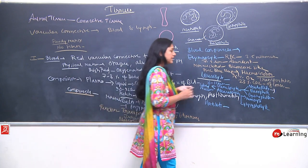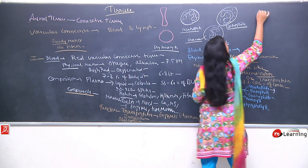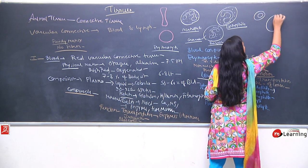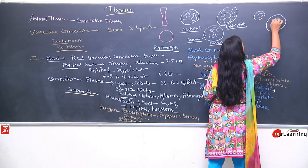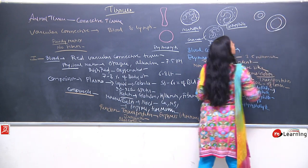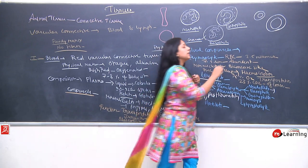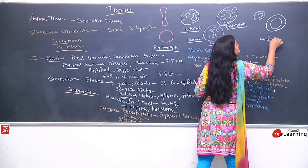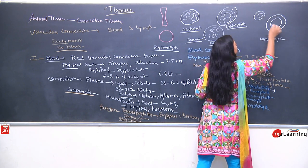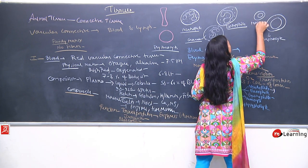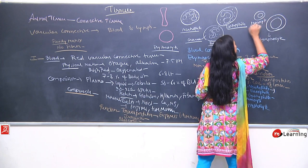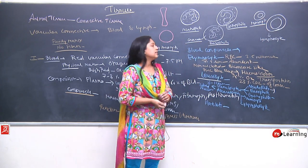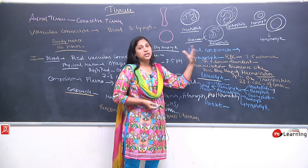Regarding agranulocytes: monocytes and lymphocytes are large cells with a large nucleus. Lymphocytes are immunity cells — antibodies are formed by lymphocytes. Monocytes and lymphocytes are agranulocytes.